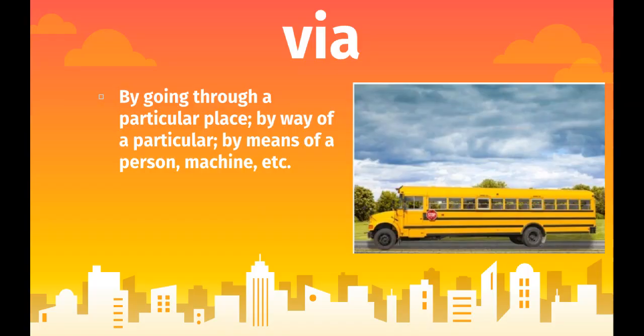Your first word is via, which means going through a particular place, by way of a particular way, or by means of a person, machine, etc. I could say I go home via Harrison Road — I went through a particular place — or I got to the store via my bicycle, which means I rode my bicycle there. On your homework, I want you to complete the sentence: I got home via — fill in the sentence.